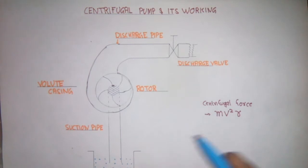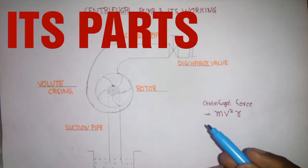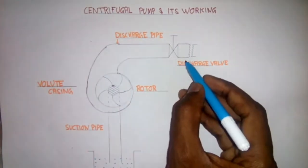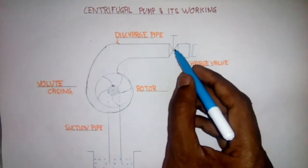First of all, I explained the various parts of centrifugal pump. First is discharge pipe which is connected on the discharge side and discharge valve which is also connected on the discharge pipe.